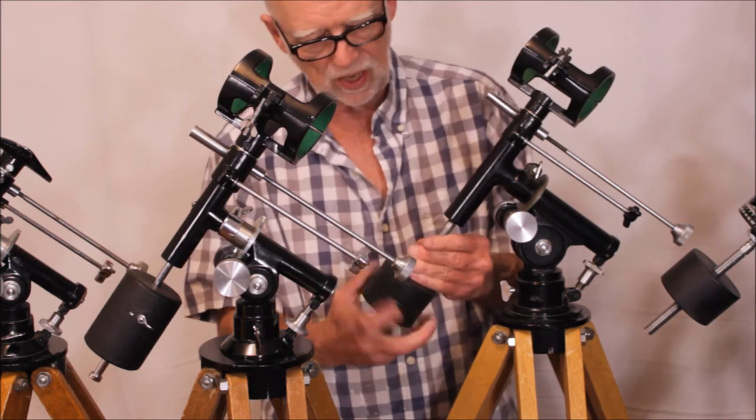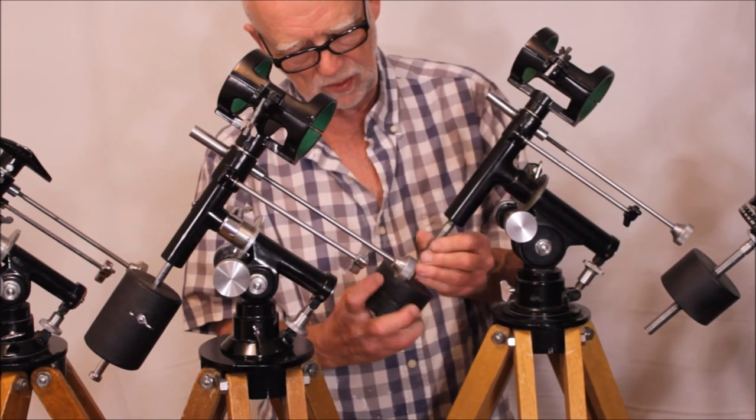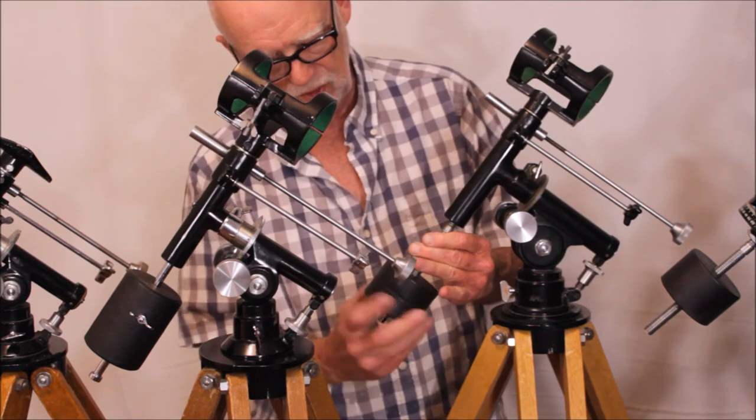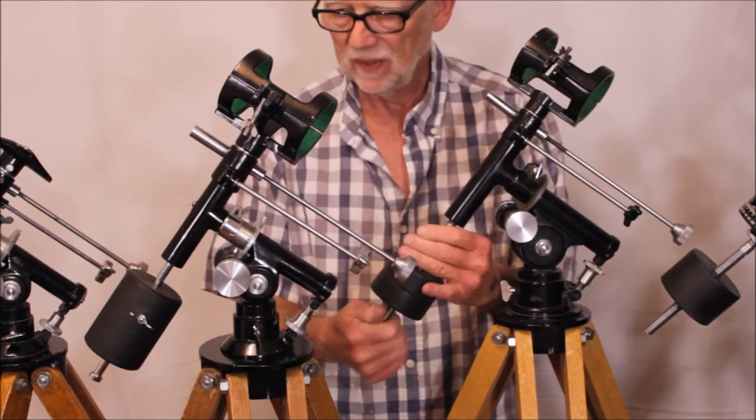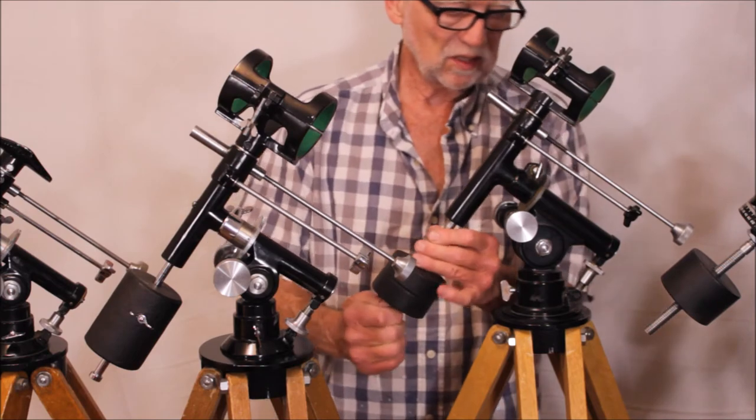And the counterweight doesn't slide on the threaded shaft, it screws on the threaded shaft. The shaft is also bigger. So that's another difference.